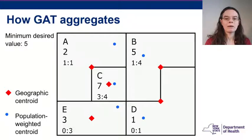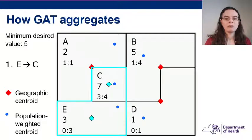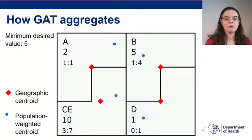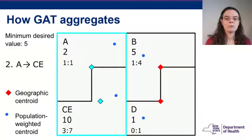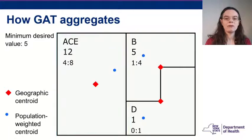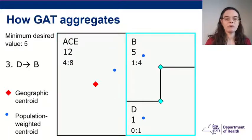How GATT aggregates: here the minimum desired value is 5. The area with the highest value below 5 is E. GATT evaluates E's neighbors and determines the closest area is C, so GATT joins E to C. Aggregation continues until all areas contain values of at least 5.